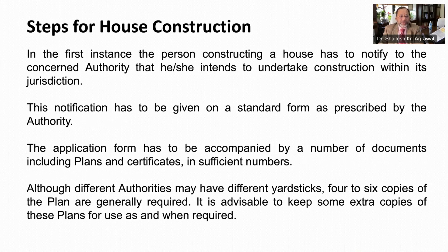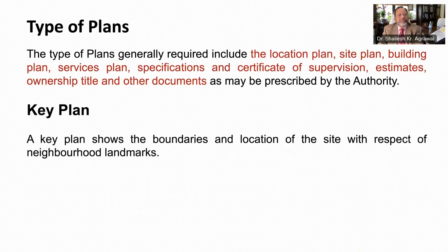It is recommended that building bylaws be followed in letter and spirit and are easily accessible through websites of these bodies. What are the steps required for taking building approval? At the first instance, the owner has to notify the concerned authority that he or she intends to undertake house construction within its jurisdiction. This notification is to be given on a standard form along with a number of documents such as plans, certificates, etc. Normally several copies of plans are required to be submitted, and therefore it is advisable to make extra copies. Plans generally required for submission include location plan, site plan, building plan, services plan — that is water supply, sanitation, and electrical plan — and specifications.